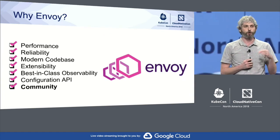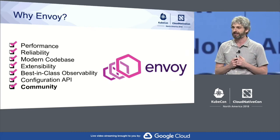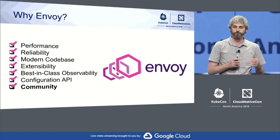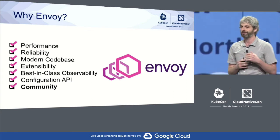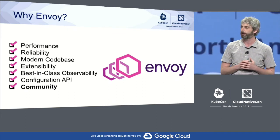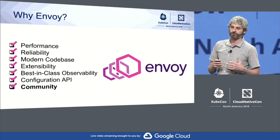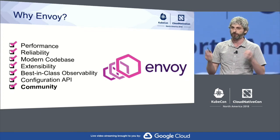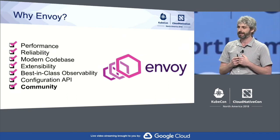Extensibility — Envoy was built from the ground up to have numerous extension points. We allow people to bring in code and build all types of things on top, which has led to an incredible number of use cases. Observability — Envoy emits copious stats, logging, and tracing, allowing people to build higher-layer systems. Our configuration API, which we call the XDS API, is really the cornerstone of Envoy — it has allowed us to decouple the data plane from the control plane, and we've seen many control planes built on top of Envoy.